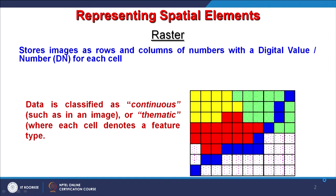Raster data is a continuous data type. One cell ends and another starts — for example, a yellow cell is adjacent to a green cell with no gap between them. In contrast, if you have two polylines such as contours, there is no information between them whatsoever. That is why we call vector data discontinuous or discrete data, whereas raster data is called continuous data.